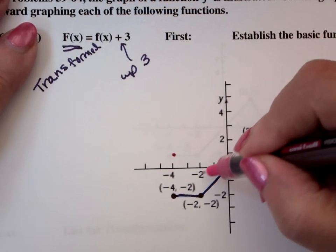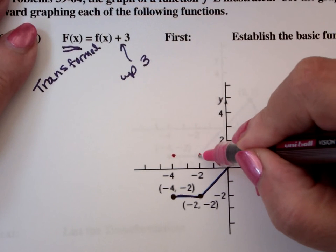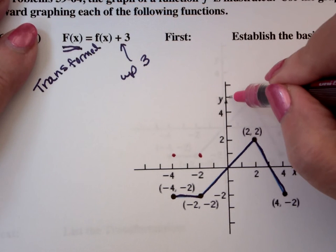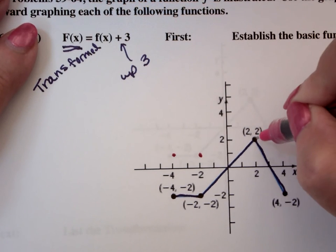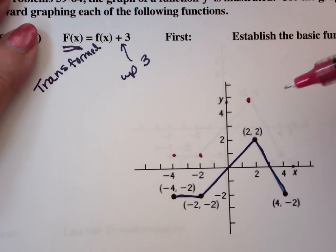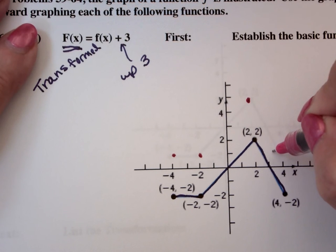Negative two, positive one. One, two, five, four, and then positive one.